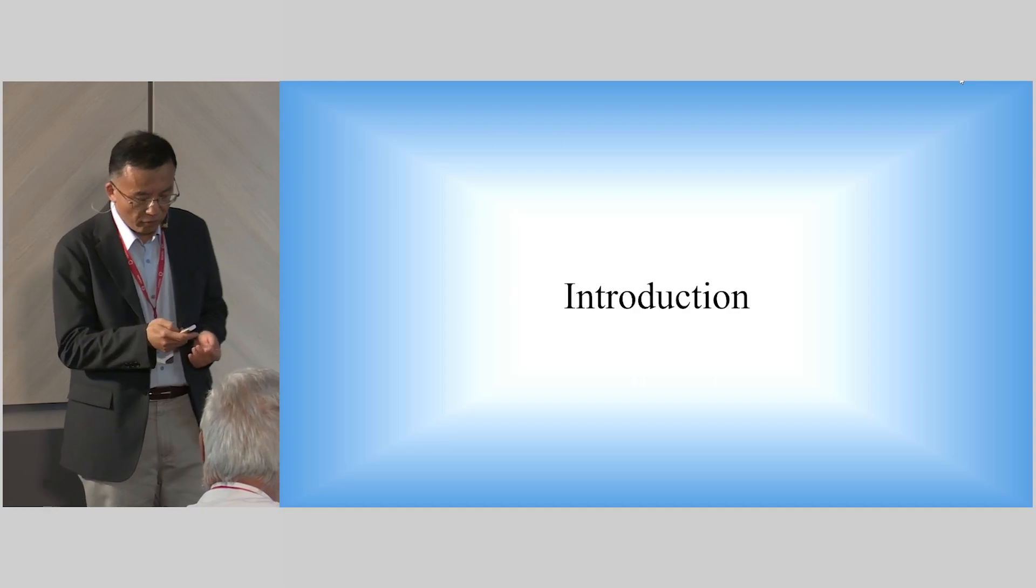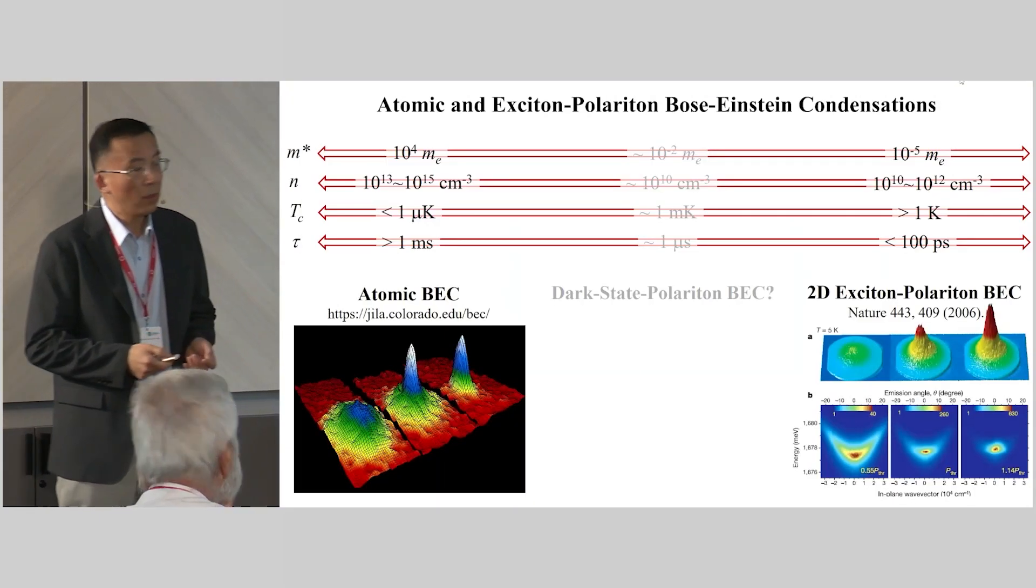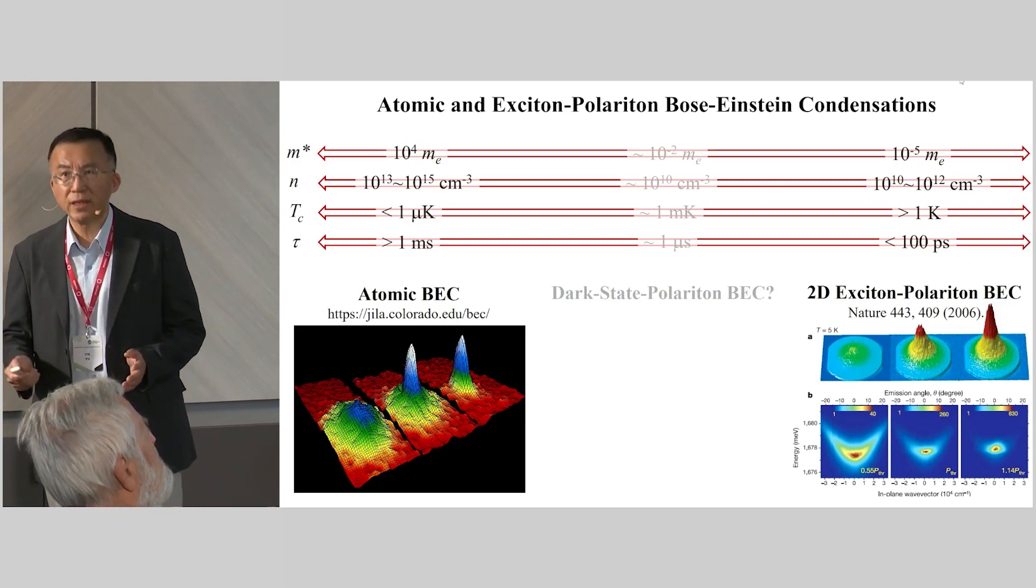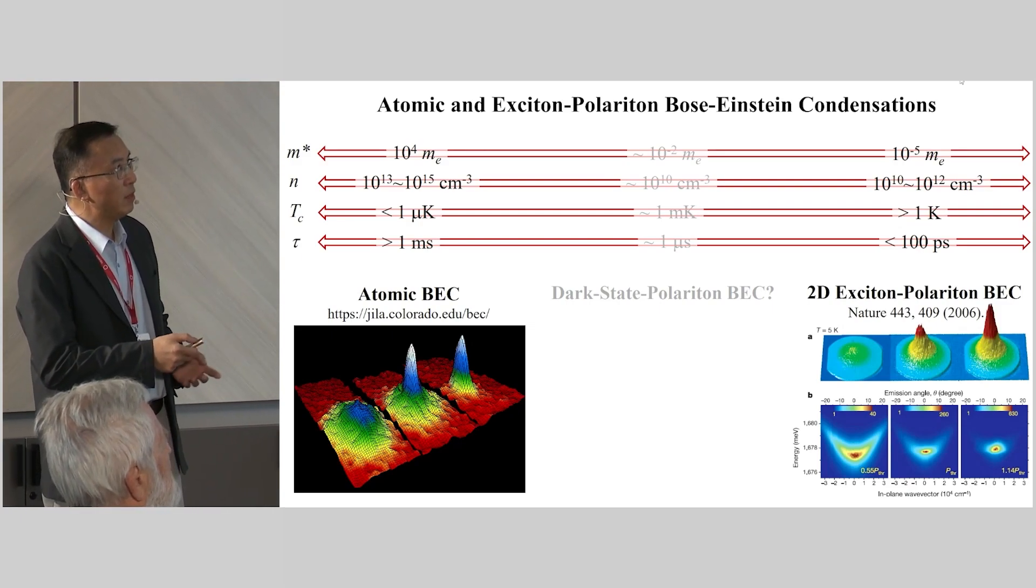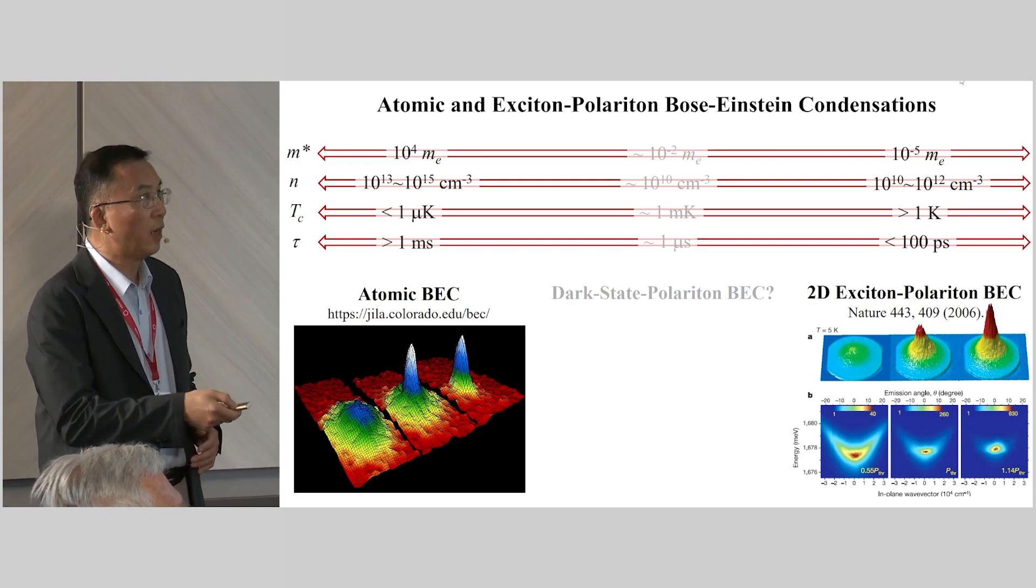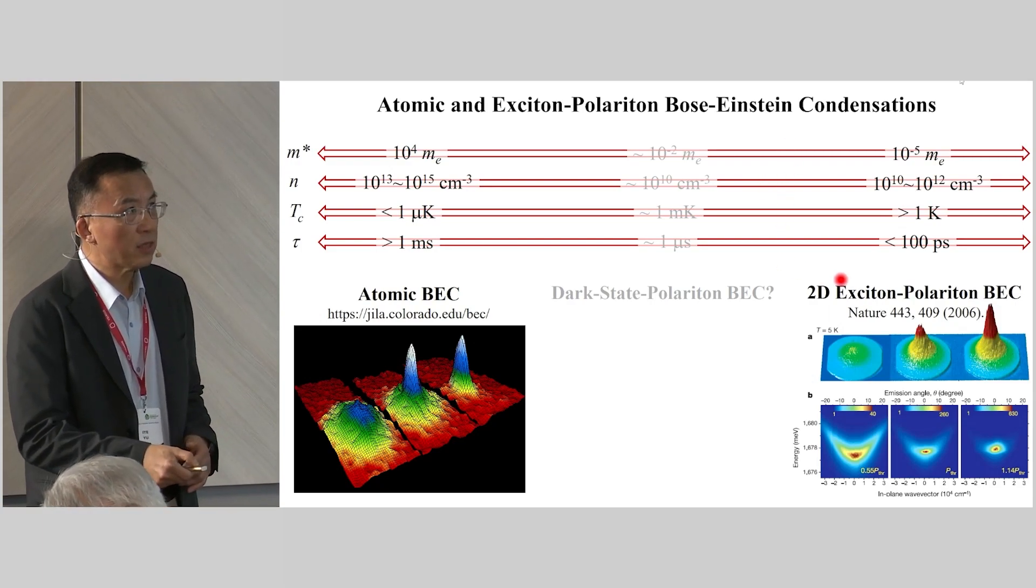Let me first give a brief introduction. So far, there are two kinds of Bose-Einstein condensation. One is the atomic or molecule BEC, and the other one is the exciton-polariton BEC.